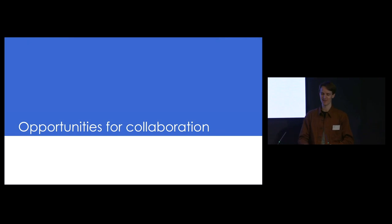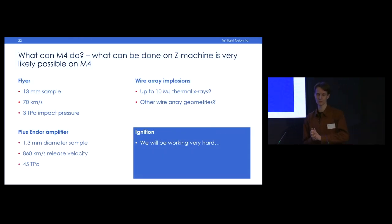Opportunities for collaboration. What can M4 do? We think basically anything you can imagine doing on the Z machine or anything that has been done on Z machine, you should be able to do on M4. It's very similar, just has more energy and more current. In terms of the flyer, 3 terapascal impact pressure. If we use our existing amplifier technology from the gun for all this year, we can get a 10 to 1 reduction in size but massively increased pressures and release velocities definitely in high energy density space. 45 terapascal is 450 megabar I think.